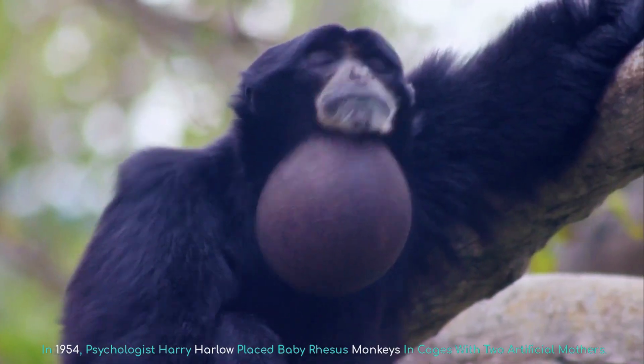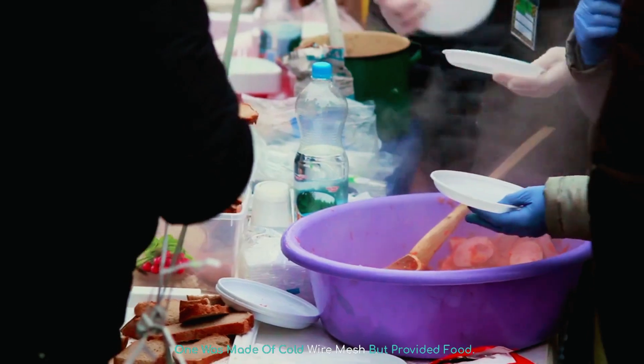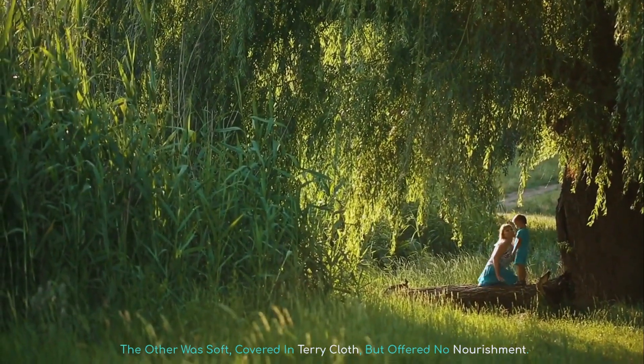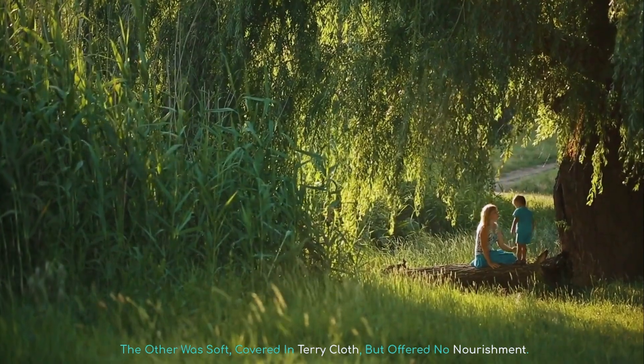One was made of cold wire mesh but provided food. The other was soft, covered in terry cloth, but offered no nourishment.